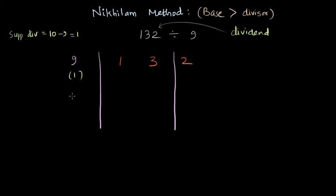Now the next step is to draw a horizontal line like this and then bring down the first digit of the dividend below, which is one. Now we have to multiply supplement divisor and this digit that we have brought down, one times one and the result is going to be one again. And we write the result below the next digit of the dividend and then we just combine these digits and we get four.